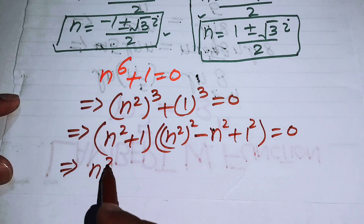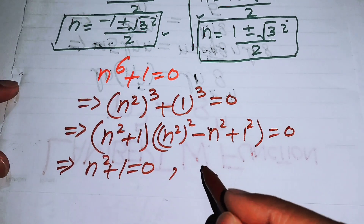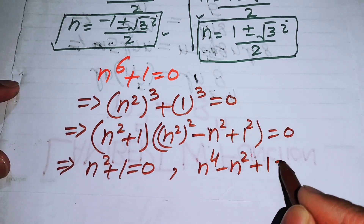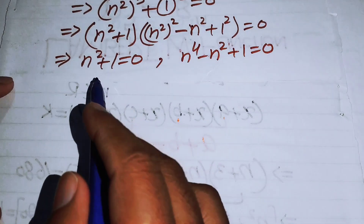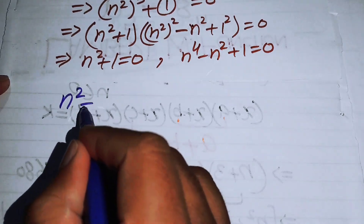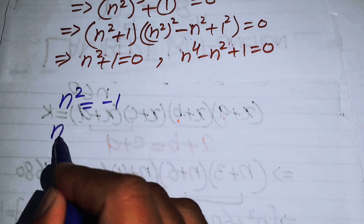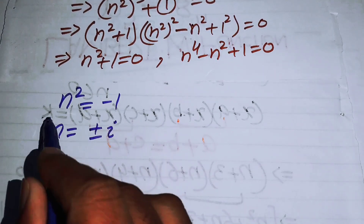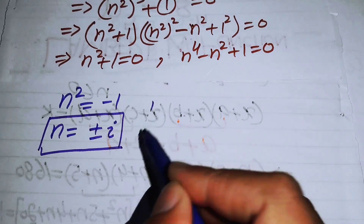This gives two cases. The first is n squared plus 1 equals 0, and the second is n to the power of 4 minus n squared plus 1 equals 0. For the first case, n squared equals minus 1, and taking the square root of both sides gives n equals plus or minus i. These are two more complex roots of the given equation.